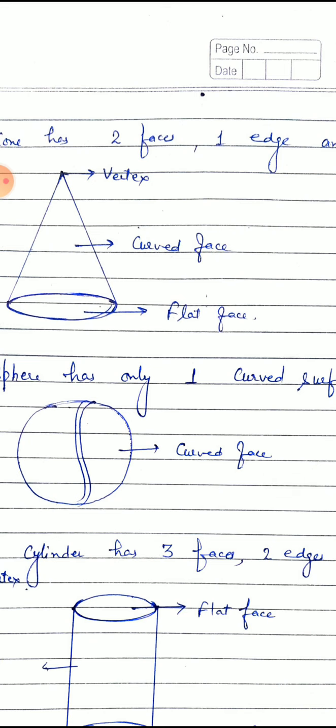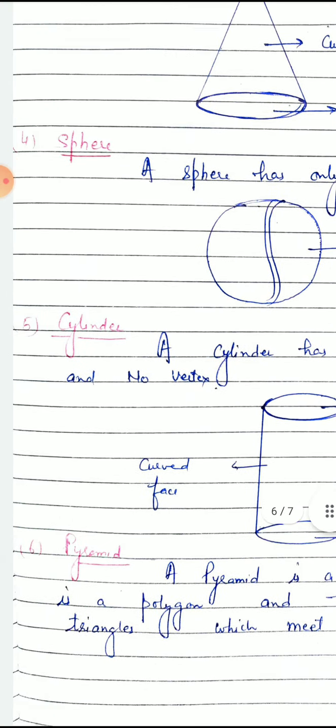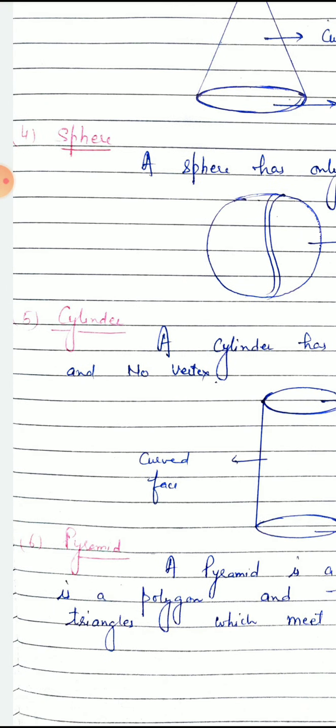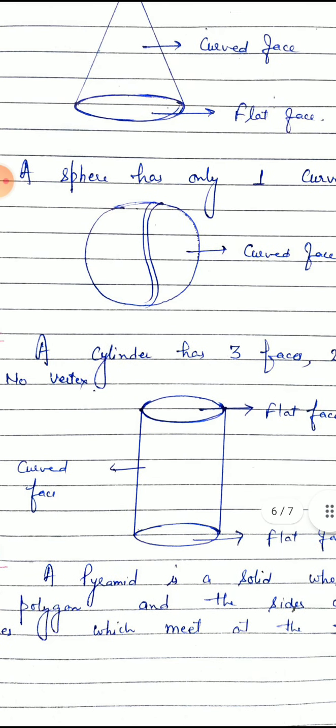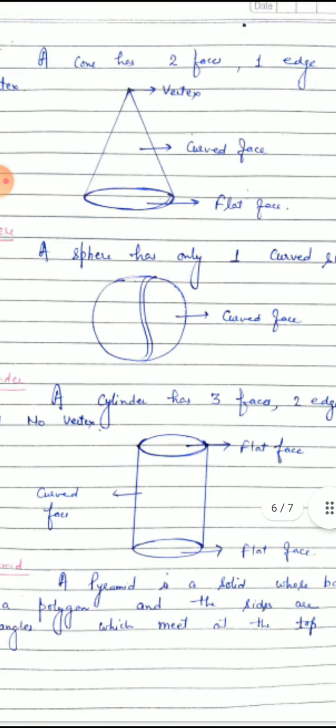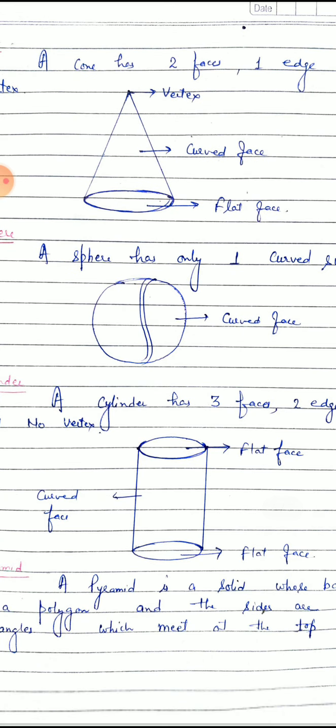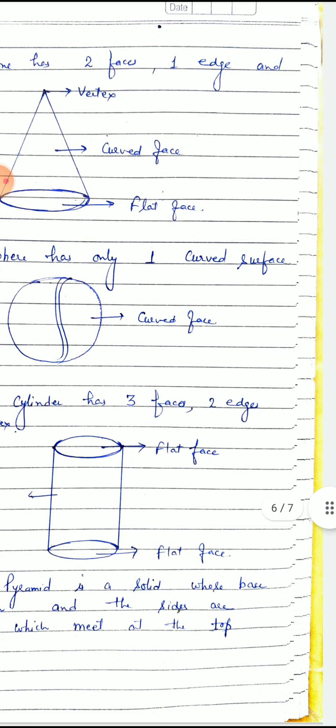It's just a circular face, one curved face. No vertex, no edge. Now come to cylinder. A cylinder has 3 faces: one curved face and two flat faces, but no vertex.